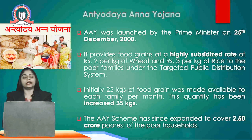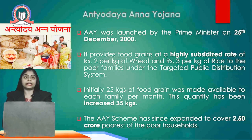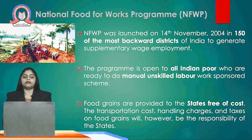The next scheme is Antyodaya Anna Yojana, introduced on 25th December 2000. The aim is to provide highly subsidized food — wheat at 2 rupees per kg and rice at 3 rupees per kg — to poor families under PDS, the Public Distribution System. Initially 25 kg of food grain was made available per family, which has been increased to 35 kg per family. This scheme was expanded to cover 2.5 crore of the poorest of the poor families.